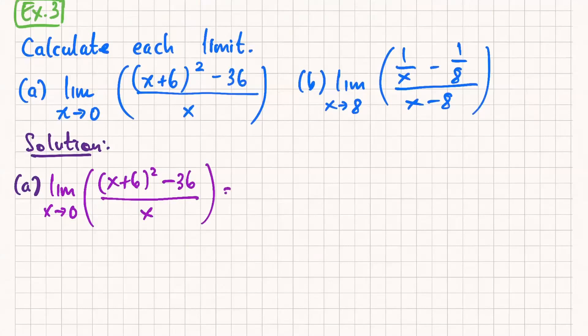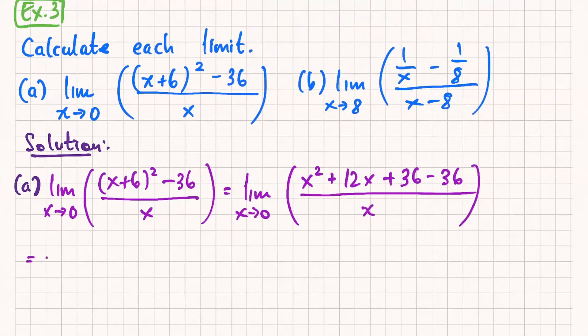Okay, so up top, I get x squared plus 12x minus, sorry, plus 36, then minus 36. Obviously, the 36s cancel out here. And then I also have a factor of x. So I get x times x plus 12, all up top.